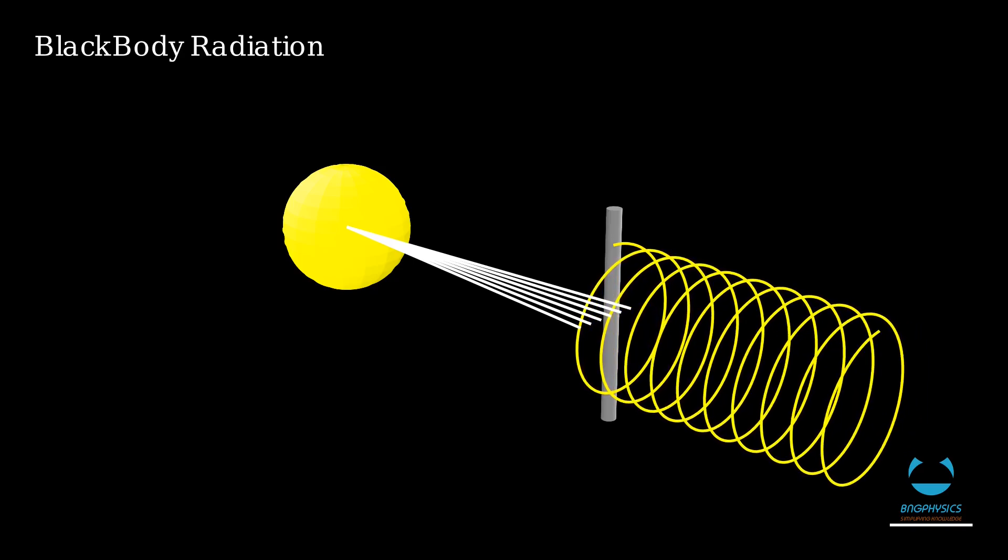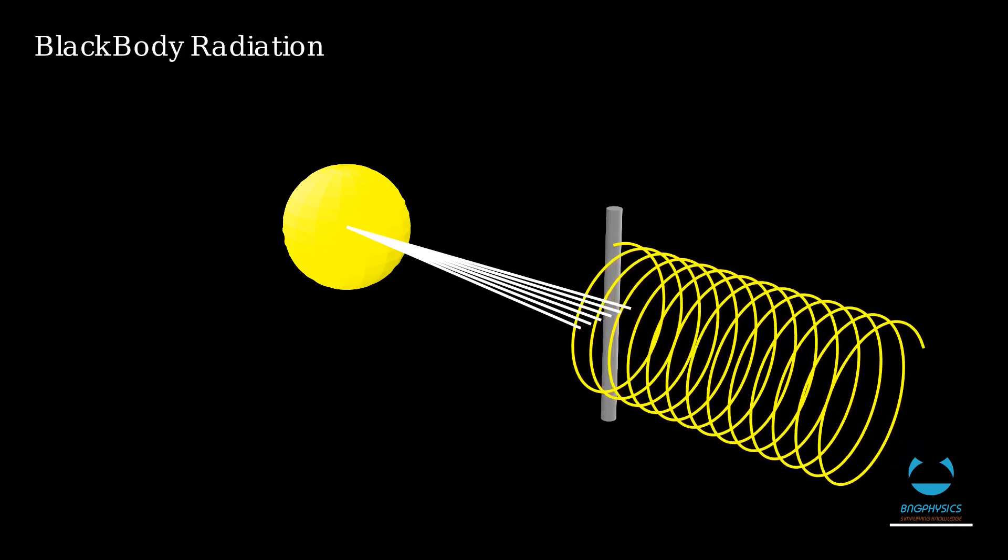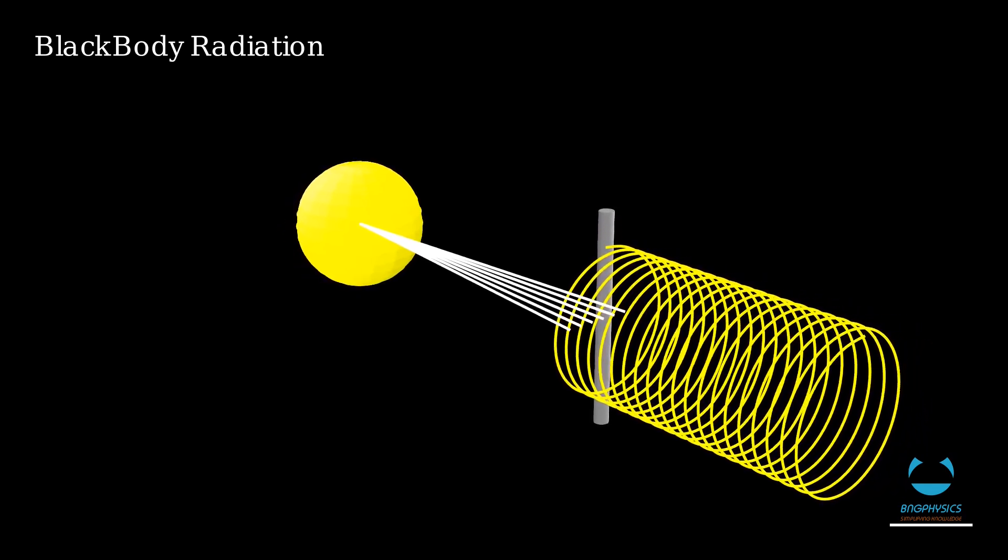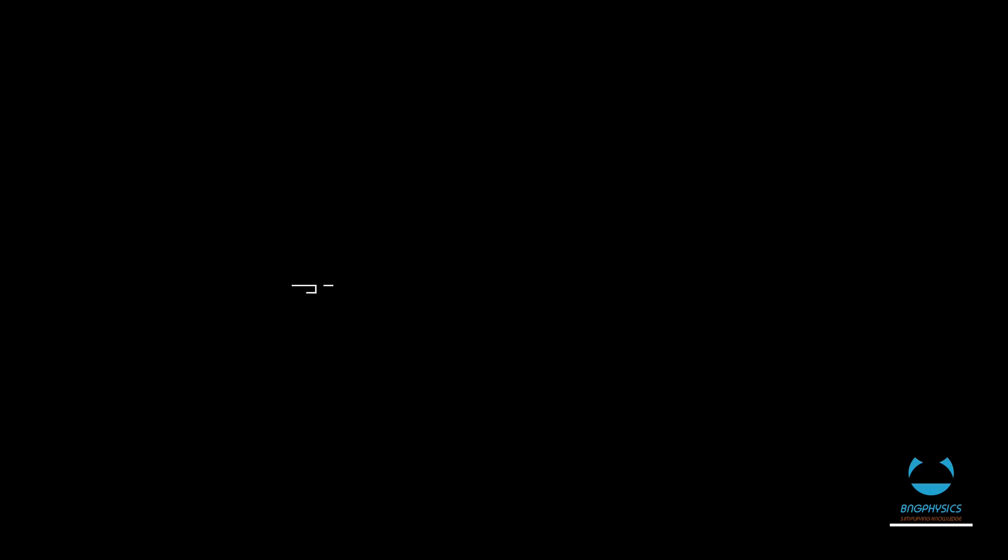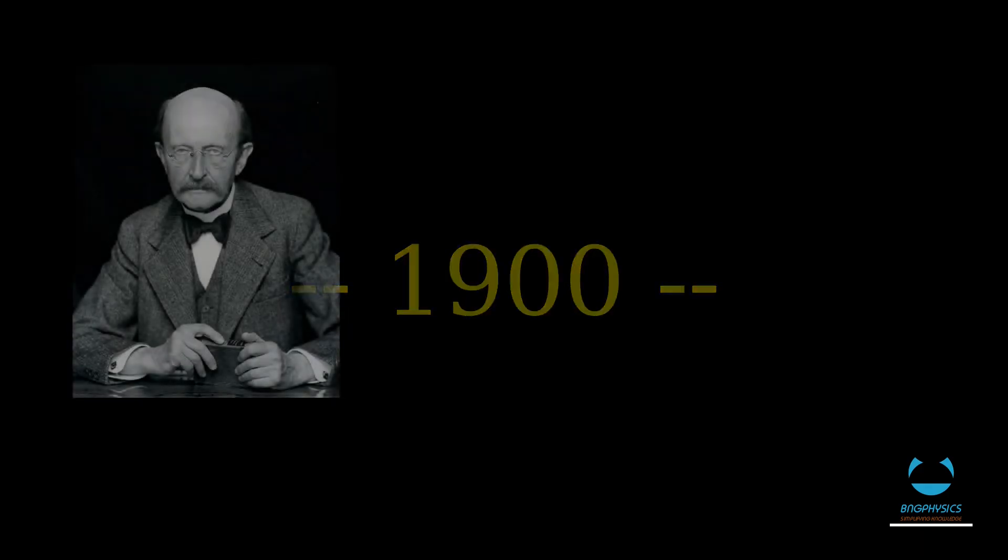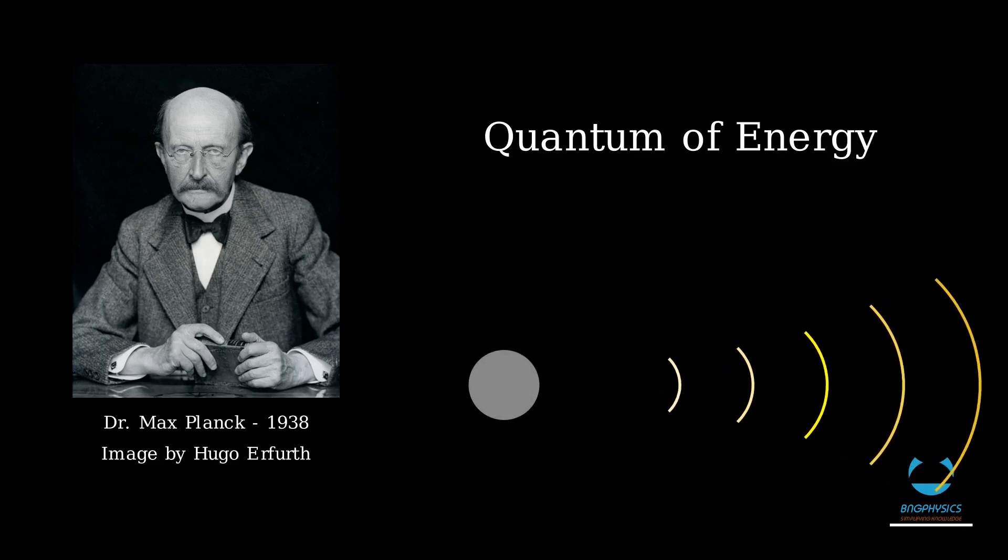This emitted radiation called black body radiation was a challenge back then that paved the way for seeking new ideas by scientists. The breakthrough was made by Max Planck in 1900 when he introduced the idea of quantum of energy while trying to explain the phenomena of black body radiation.